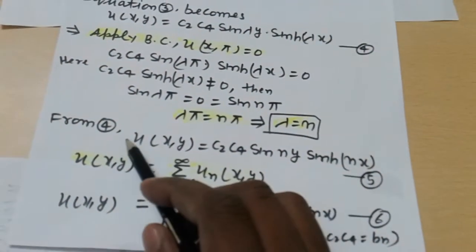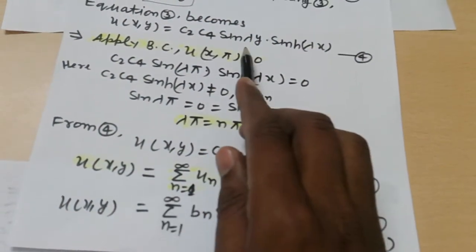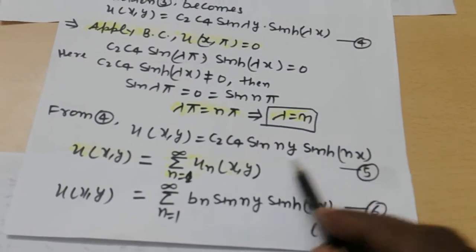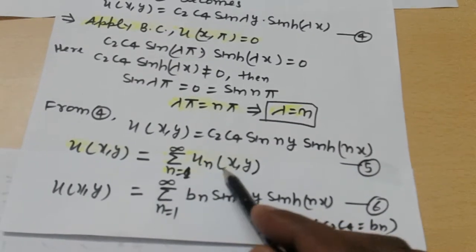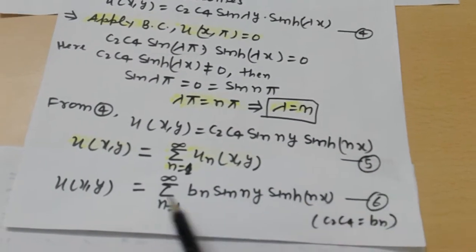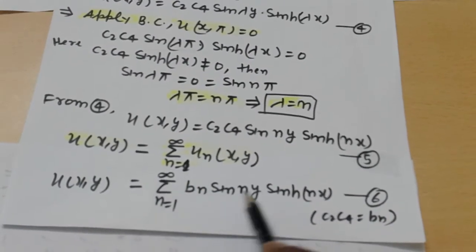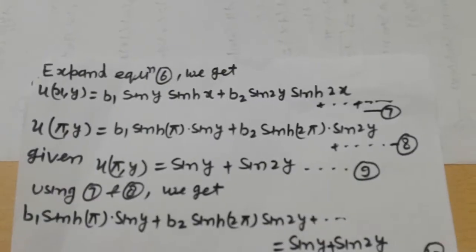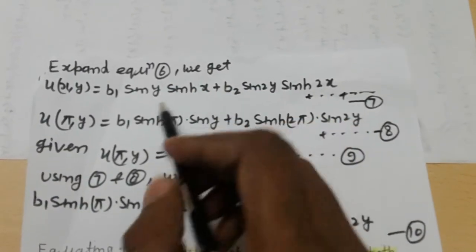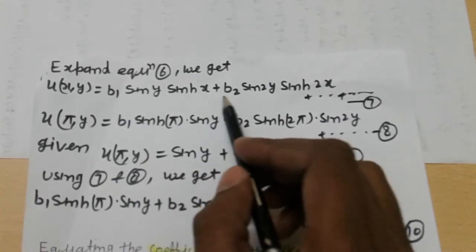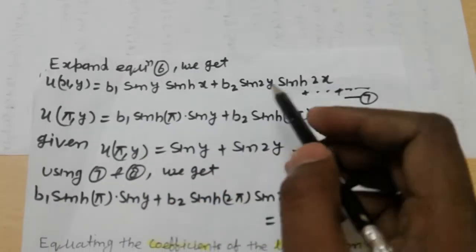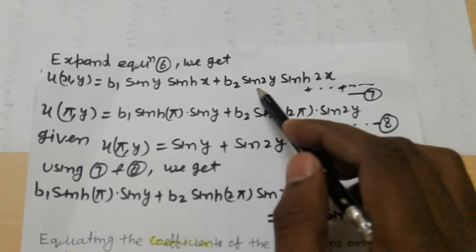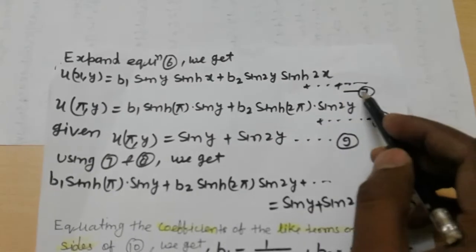From equation 4, putting λ = n: u(x,y) = c2 c4 sin ny · sinh nx. The general solution is u(x,y) = summation from 1 to infinity of u_n(x,y), which gives u(x,y) = Σ b_n sin ny · sinh nx (equation 6). Expanding equation 6, we get u(x,y) = b1 sin y · sinh x + b2 sin 2y · sinh 2x + ... (equation 7).